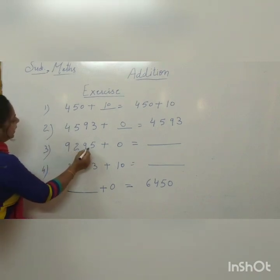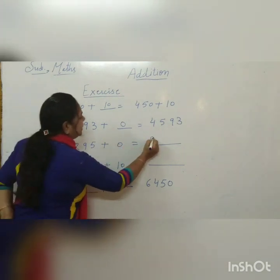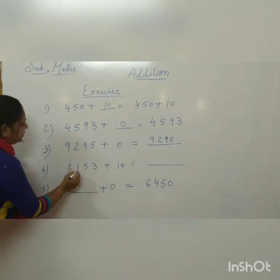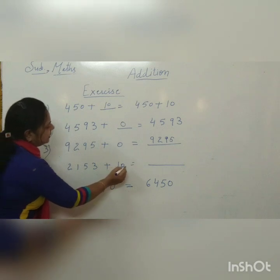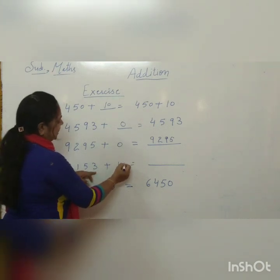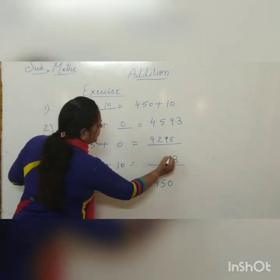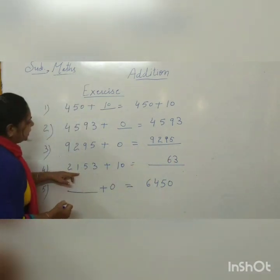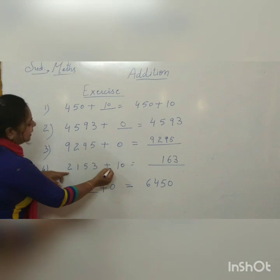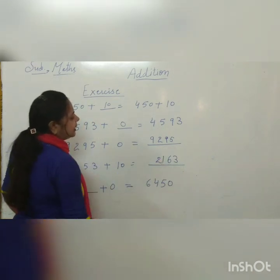Question 4: 2,153 plus 10 equals. Starting from the ones place: 3 is in the ones place and 0 is in the ones place. 3 plus 0 is 3. In the tens place: 5 plus 1 equals 6. At the hundreds place: 1, there is no number to add, so we write 1. At the thousands place: 2, there is no number to add, so we write 2. The number becomes 2,163.